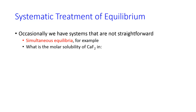When we talk about the systematic treatment of equilibrium, we're talking about a process for analyzing equilibrium systems that are not straightforward. This happens when there are simultaneous equilibria present, where either a product or reactant in one equilibrium is also participating in another equilibrium at the same time.